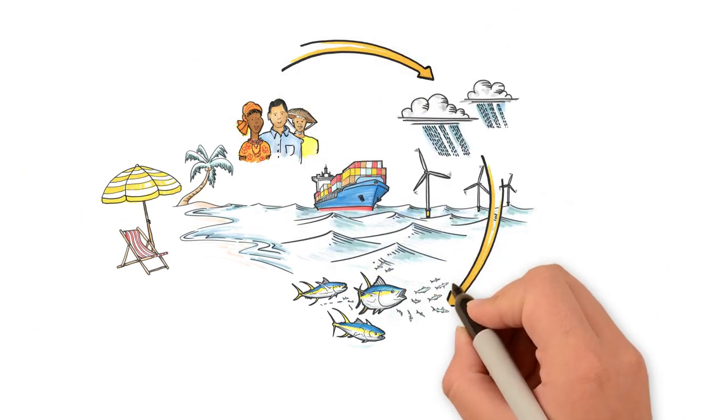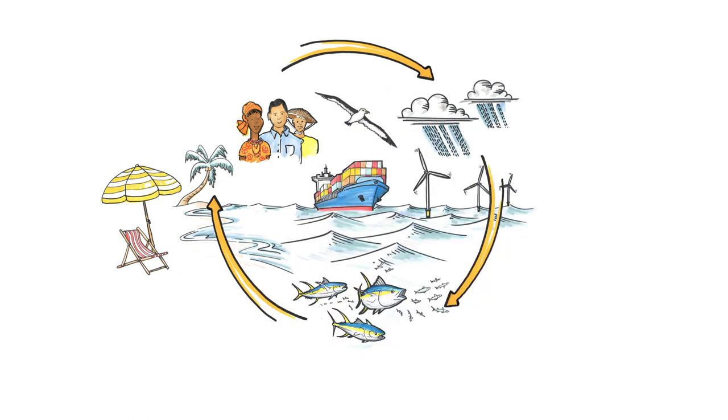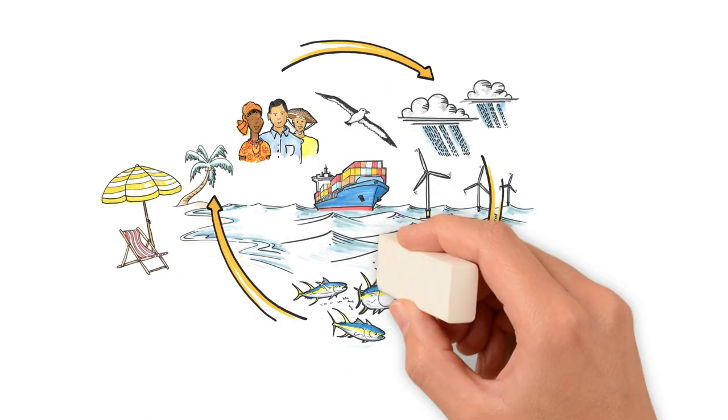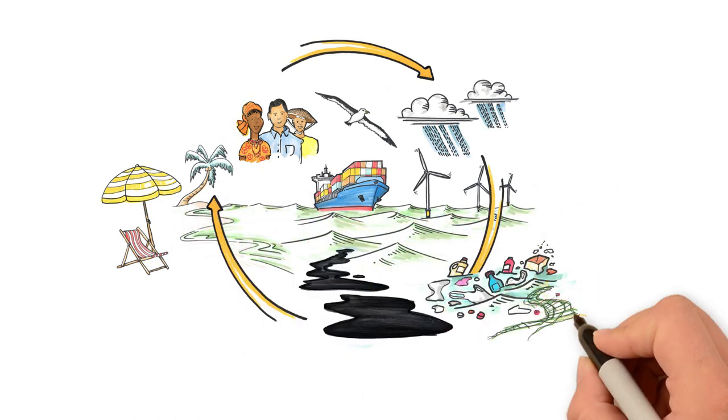All of which require a dynamic, well-balanced ecosystem. But we also harm the ocean through overfishing, oil spills, ocean acidification, and plastic waste.